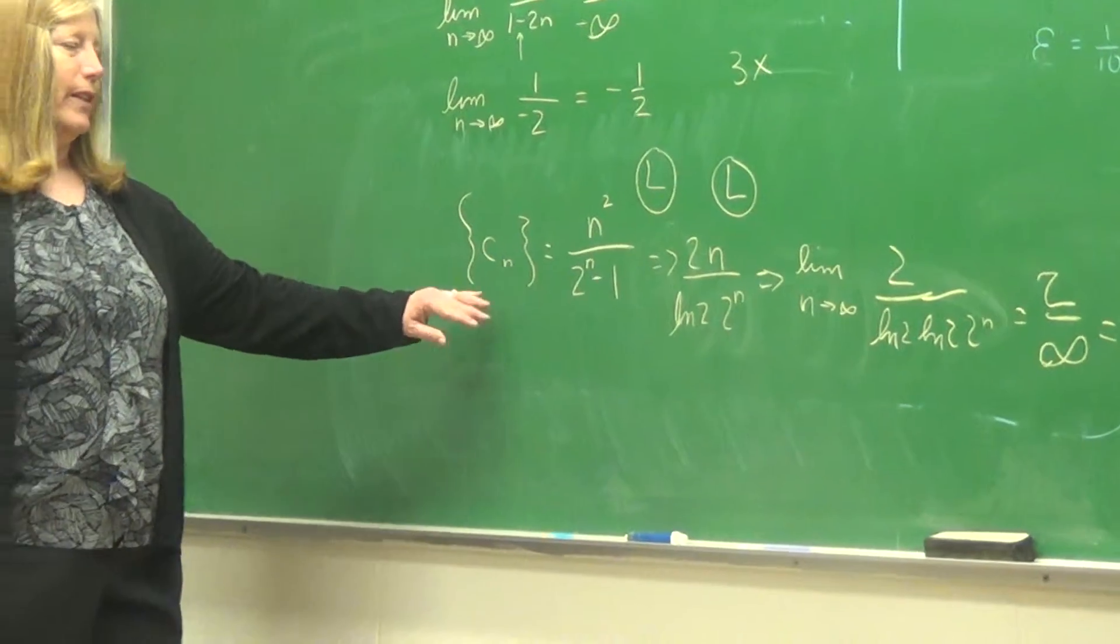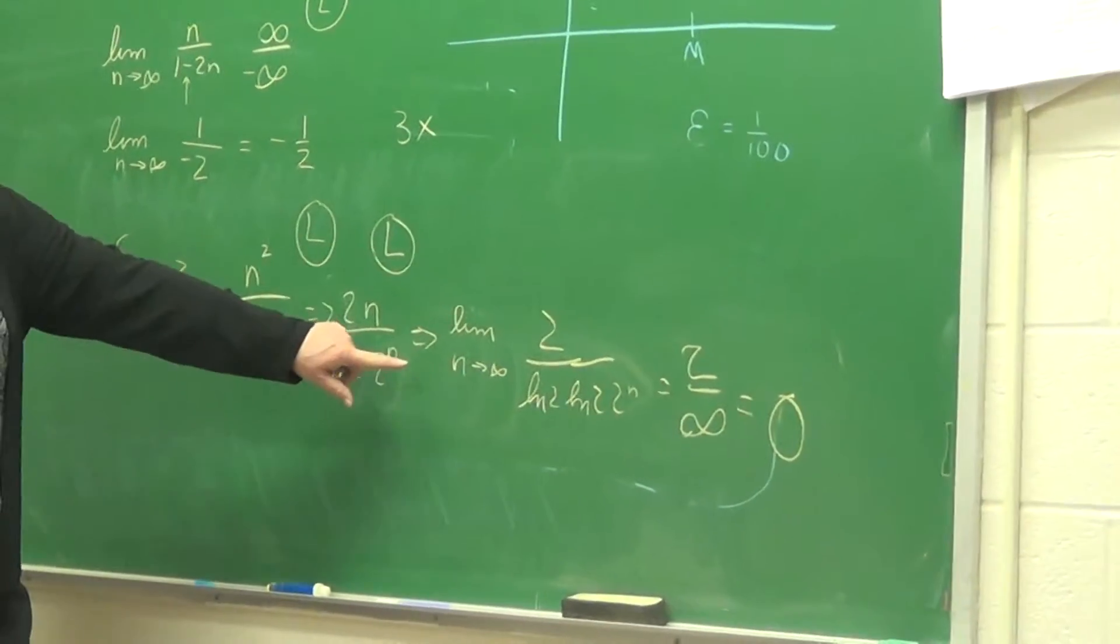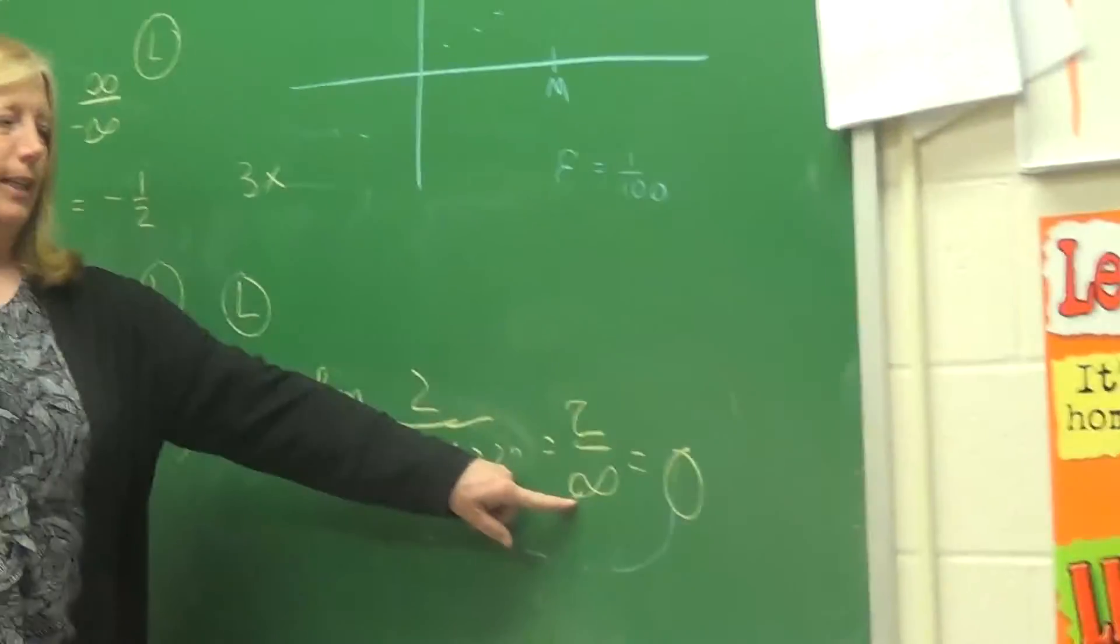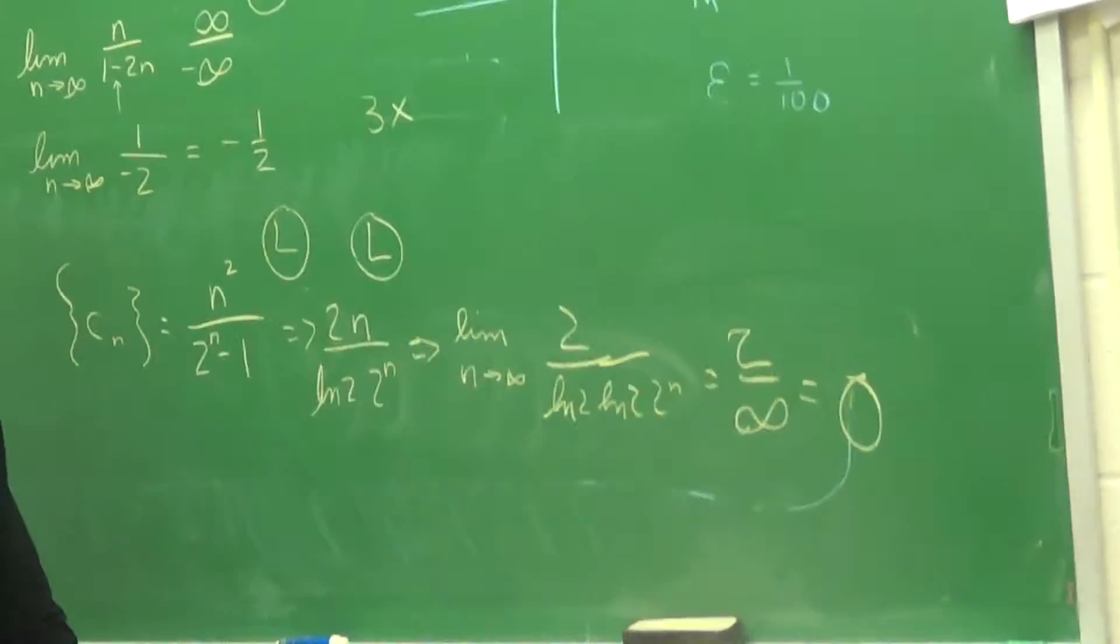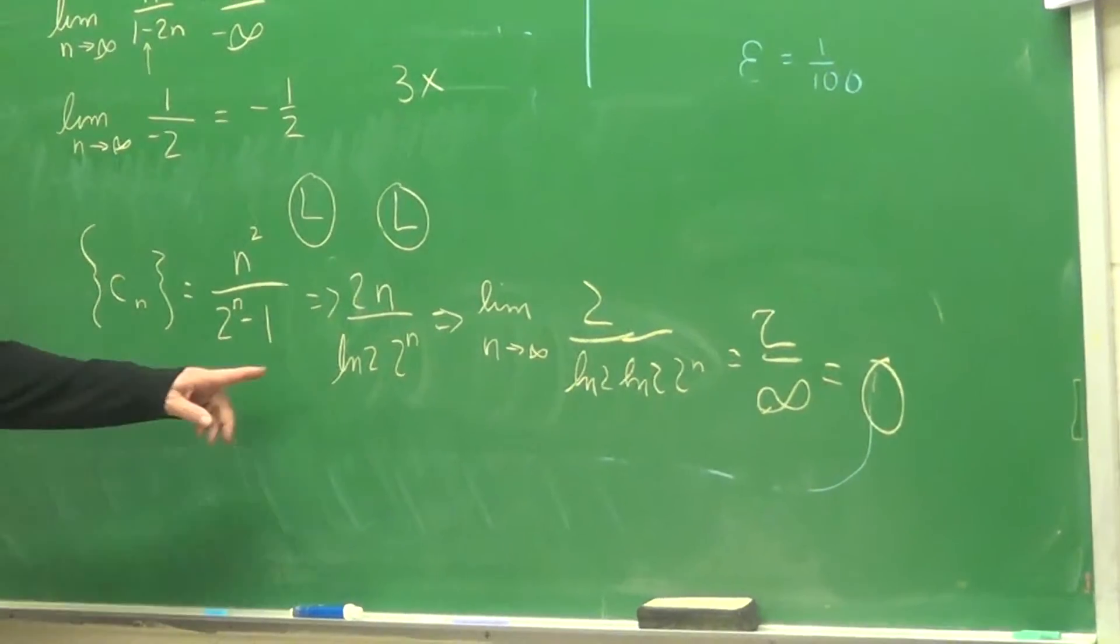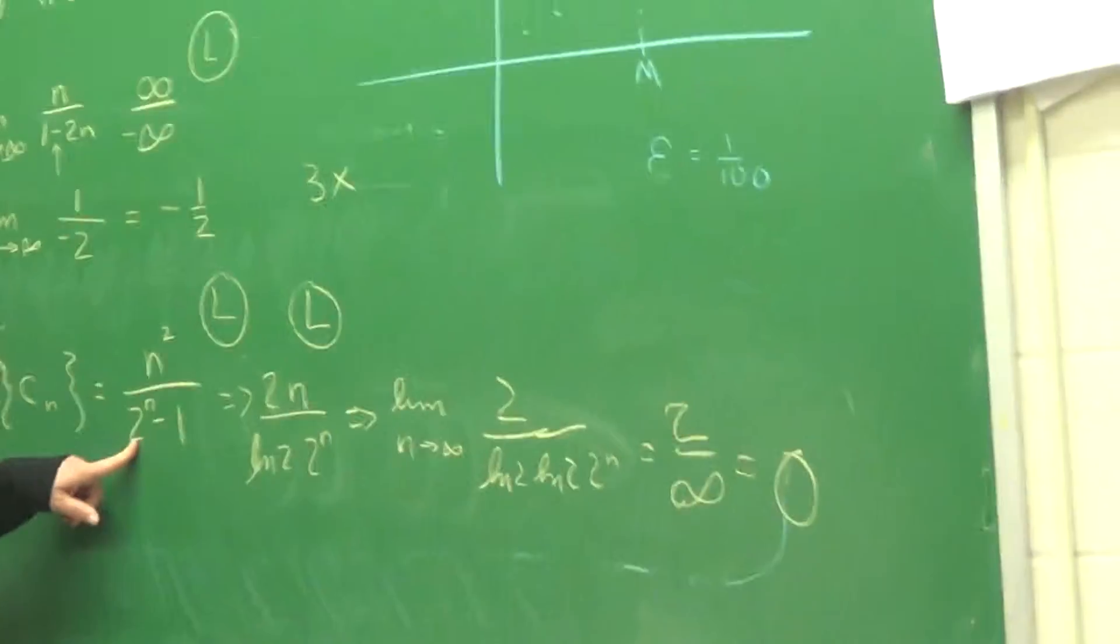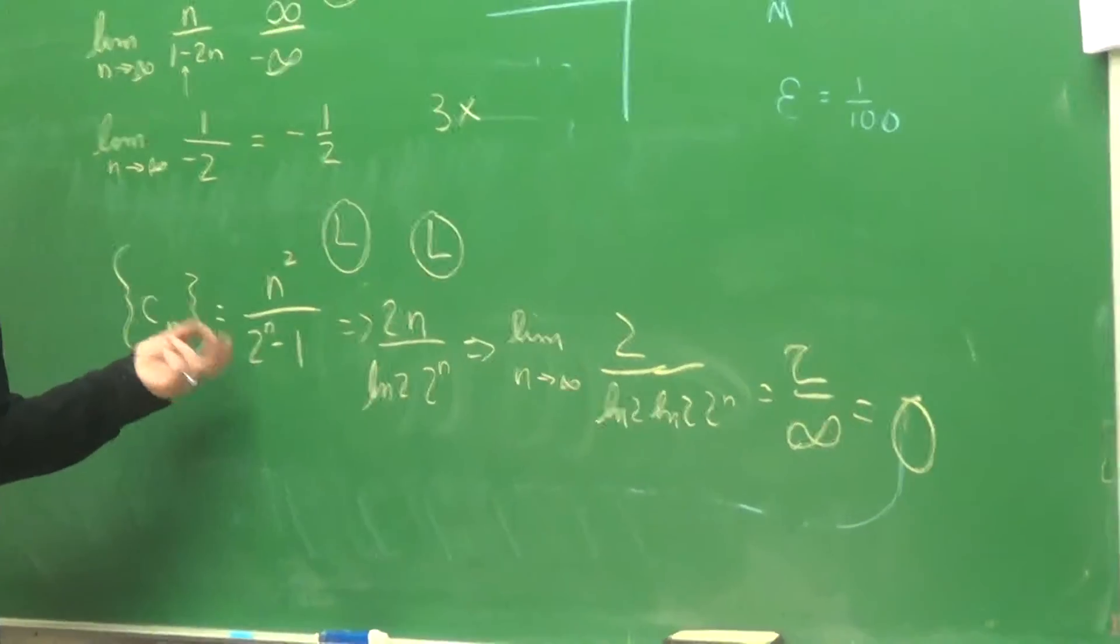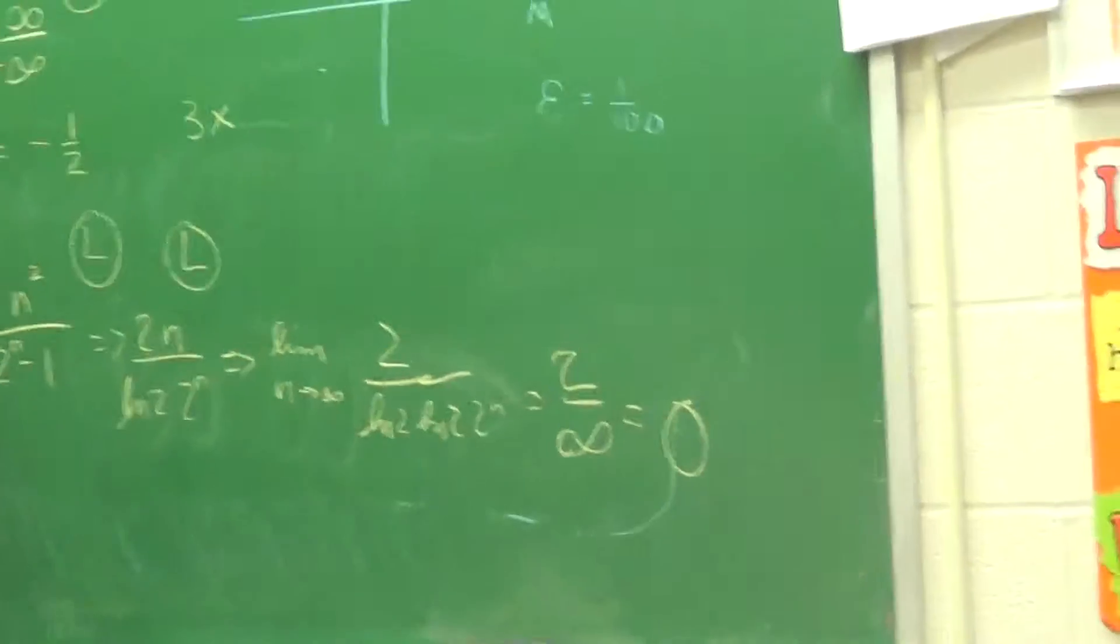All right, Gianni, we finished discussing it. We applied L'Hopital twice, and we finally got 2 over infinity, which goes to 0. So you can check that out. And in the middle, we had to remember what the derivative of 2 to the n is. a to the x, its integral is ln of a, a to the x. So we applied that.